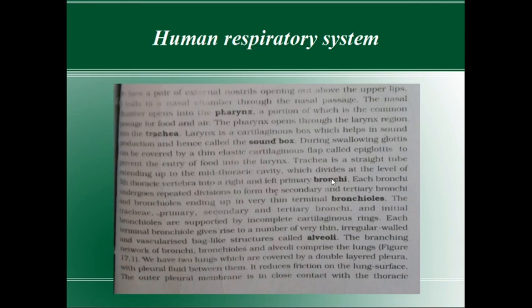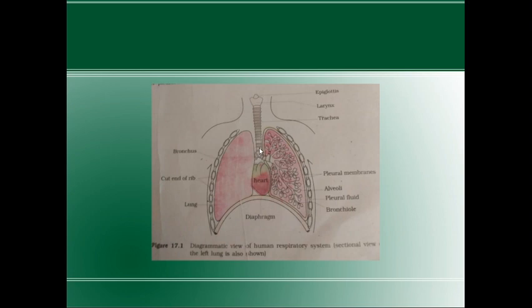The trachea divides into right and left bronchi. Each bronchus undergoes repeated divisions to form secondary and tertiary bronchi. It will again divide into primary bronchi, then secondary bronchi, then tertiary bronchi.